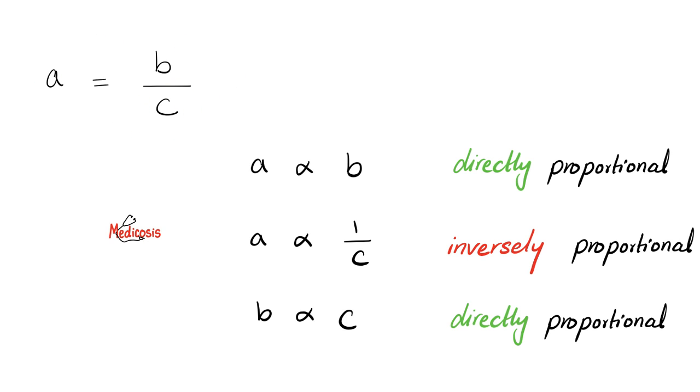If I write it like this, it means that the relation between a and c is inverse. If c goes up, a goes down. If c goes down, a goes up, provided that b remains constant, of course.